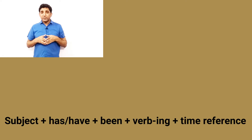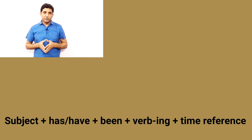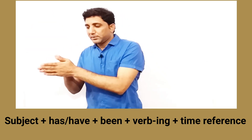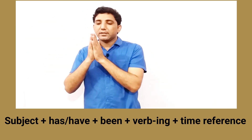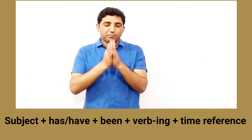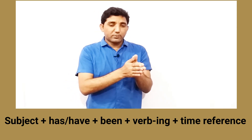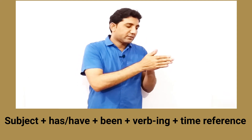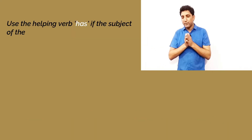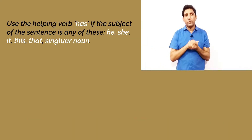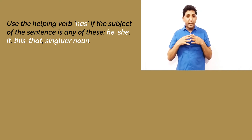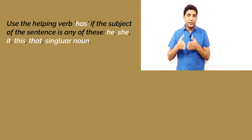Now let's see the construction to form present perfect progressive sentences. First comes the subject, then the helping verb 'has' or 'have', then 'been', then the base form of the verb with the addition of '-ing', and then the time reference.